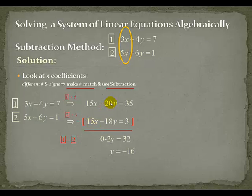Negative 20y take away negative 18y — that would be negative 20y plus 18y. Don't forget the change in signs here because of the negative and the negative. So that will give us negative 2y.